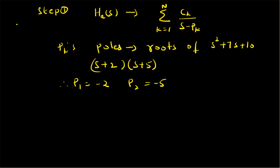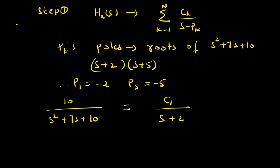Using partial fractions: 10 / (s² + 7s + 10) = c1 / (s + 2) + c2 / (s + 5). To find c1 and c2, we compare both sides. Comparing constants gives us: 5·c1 + 2·c2 = 10.